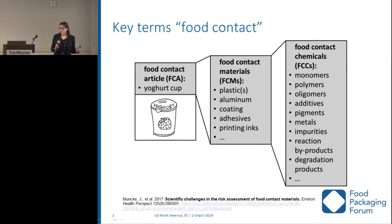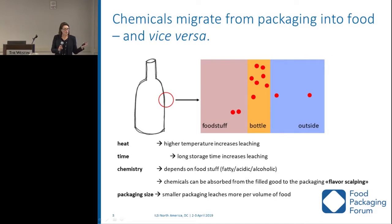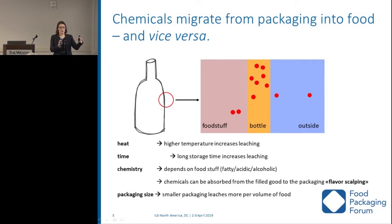We're interested in understanding whether food contact chemicals pose a health risk to humans. We've all heard a lot about migration already. One aspect worth noting is the reverse process of chemical partitioning — known in FDA circles as flavor scalping — when food chemicals are taken up by the packaging material. That's important to keep in mind for recycling. The parameters are heat, storage time, chemistry of the foodstuff and packaging, but also packaging size. Smaller food packaging potentially has relatively higher migration levels than big bulk food packaging because shrinking the package increases the surface-to-volume ratio.